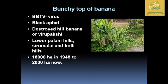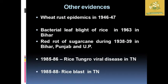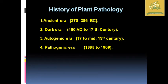Other notable plant disease epidemics include wheat rust epidemics in 1946 and 1947, bacterial leaf blight of rice in 1963 mainly in Bihar, red rot of sugarcane during 1938 to 1939 in Bihar, Punjab, and Uttar Pradesh, and in 1985 to 1986 the rice tungro viral disease in Tamil Nadu, as well as rice blast in Tamil Nadu from 1985 to 1988.